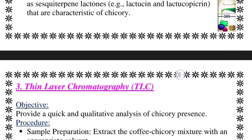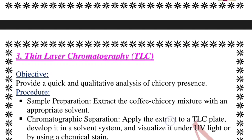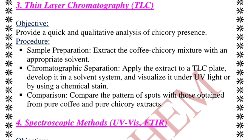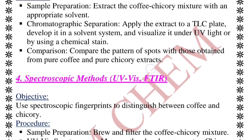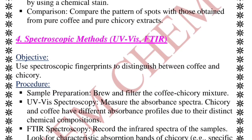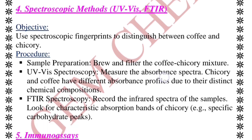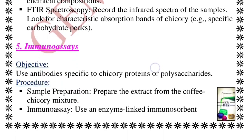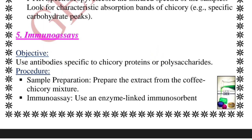Next method for chicory detection is gas chromatography, same as before. We also have thin layer chromatography, with an elaborate procedure mentioned in the PDF. Spectroscopic methods — UV-Vis and FTIR — are also used here, as we have seen in the previous case.